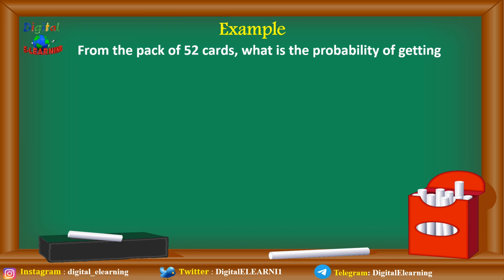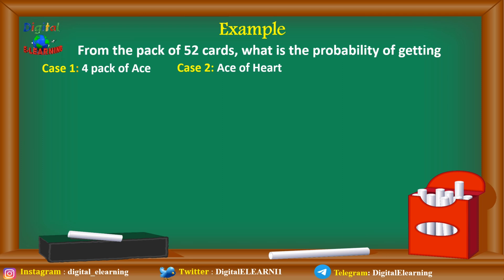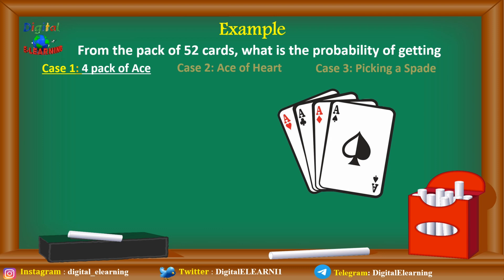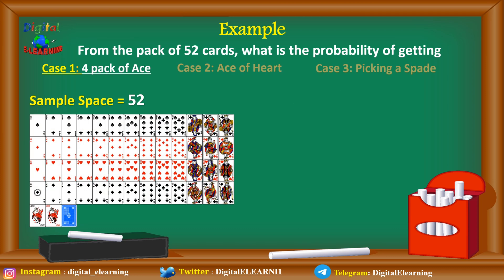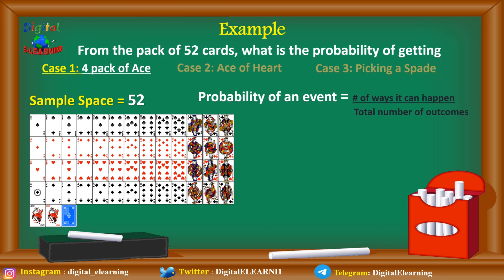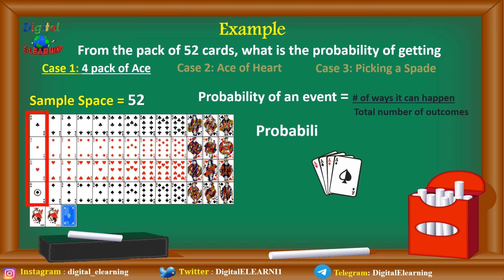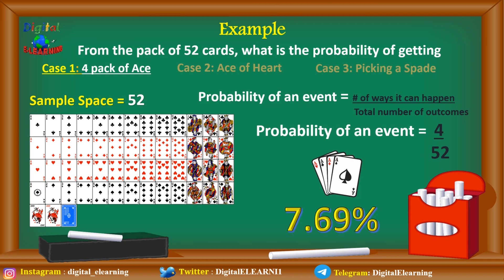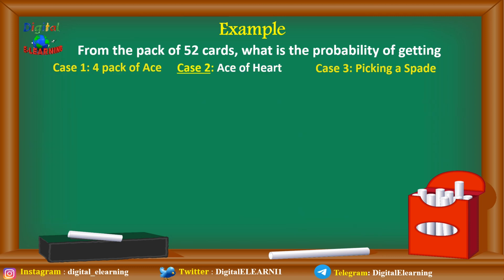Now let's take an example with a pack of cards. What is the probability of getting, first case, any ace from the pack? The sample space consists of 52 cards. Applying the probability formula, there are four aces in the deck, so the probability is 4 divided by 52, which comes to 7.69 percent.